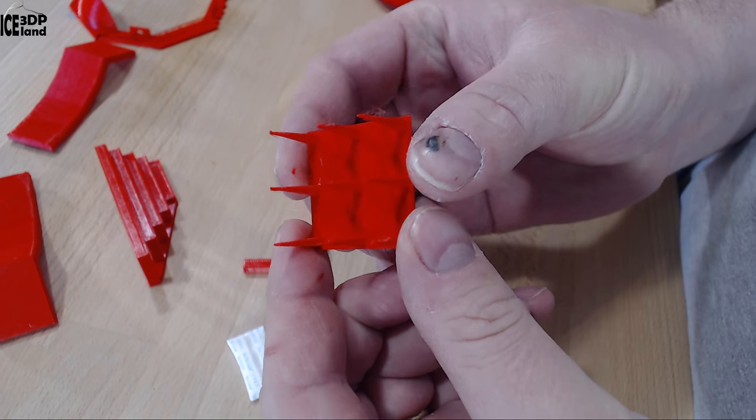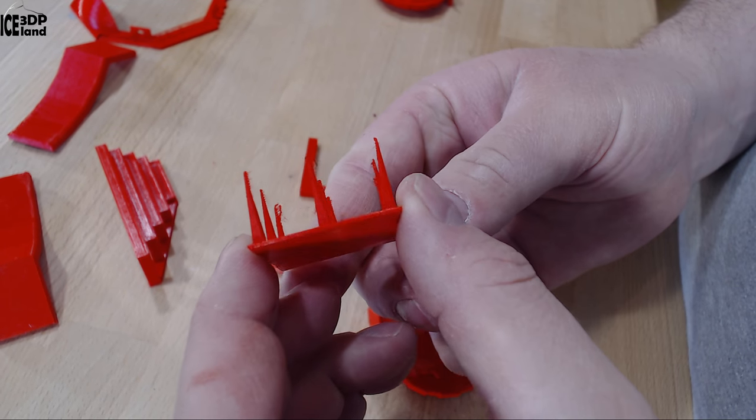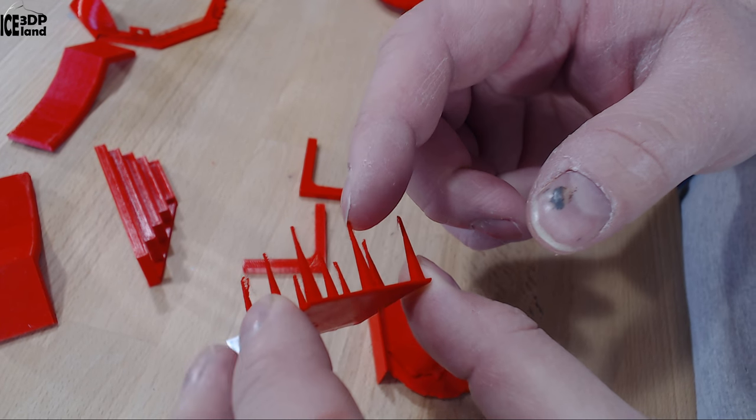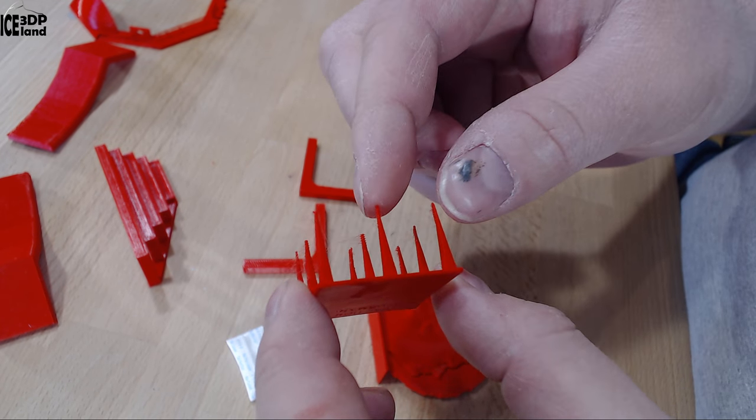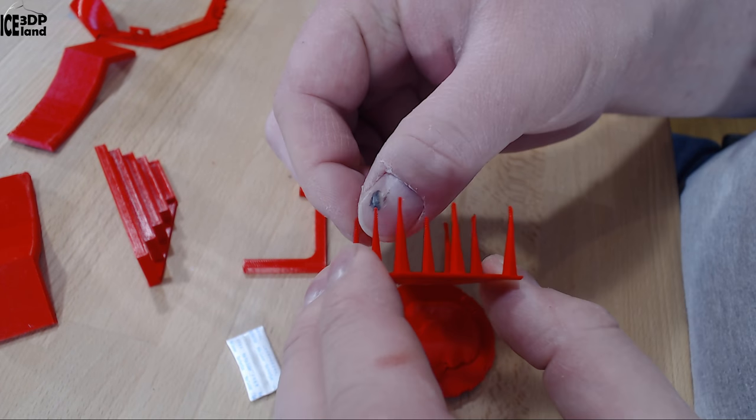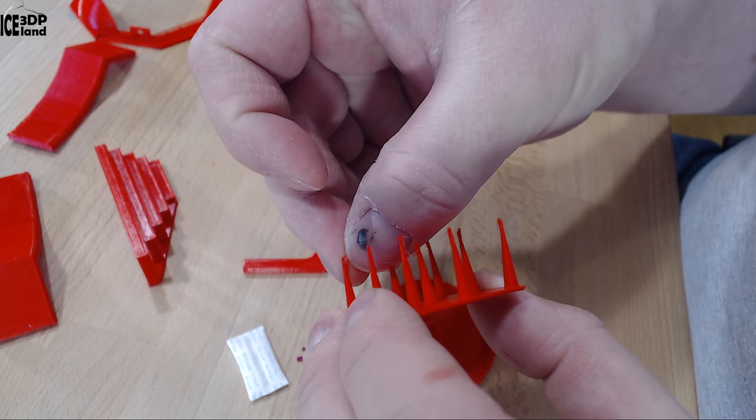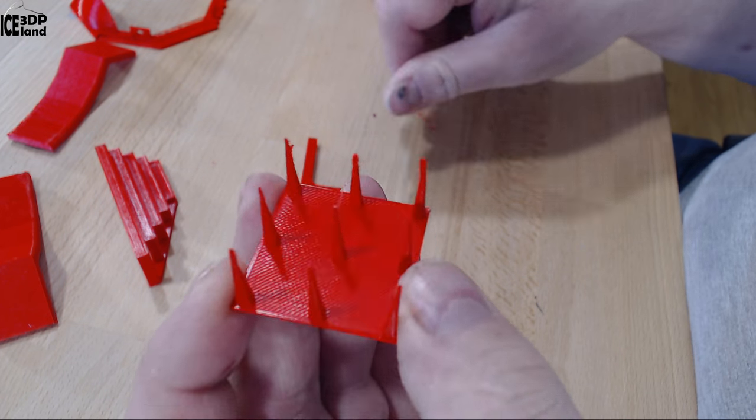So the first print I did was this retraction test and it was giving very good results. There was a tiny amount of stringing at the topmost part but other than that it was looking very good. No special issues, a tiny amount you can see here of a string but nothing too serious. I'm quite happy with this.